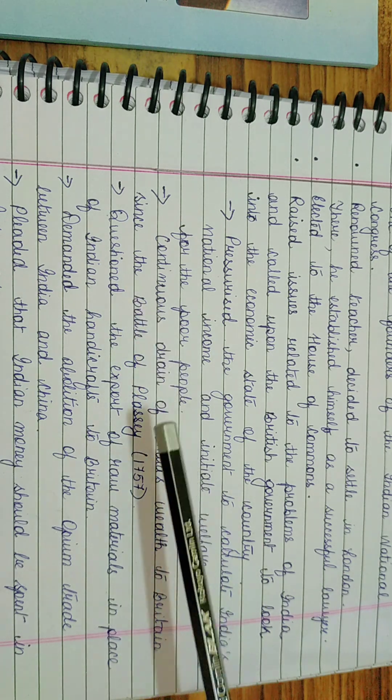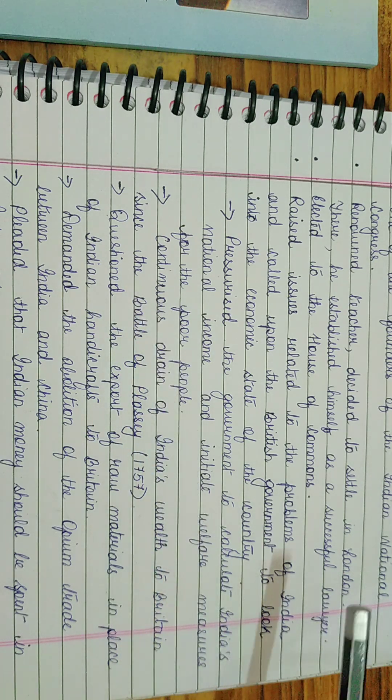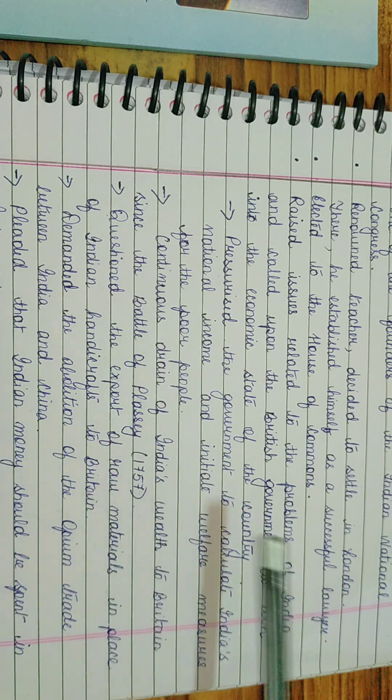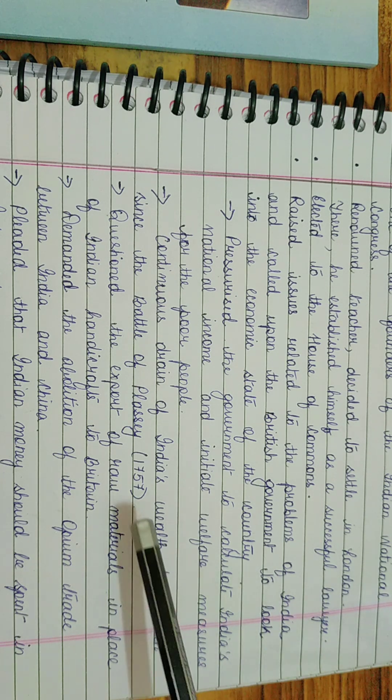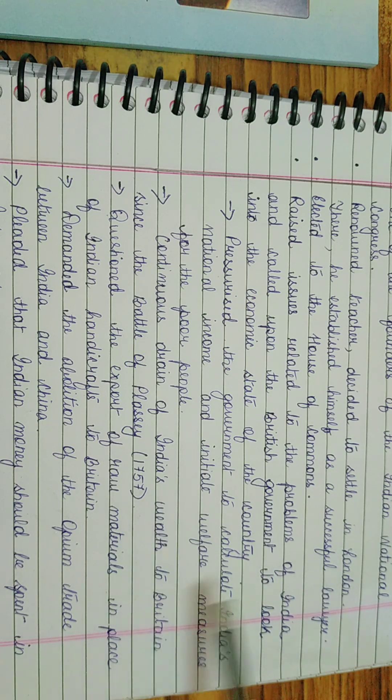He also questioned the export of raw materials in place of Indian handicrafts to Britain. So we basically know that the British government used to export India's raw cotton to Britain, and Britain's machine-made goods and clothes were sold in India at high prices.